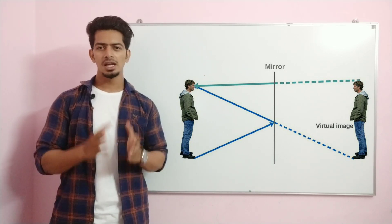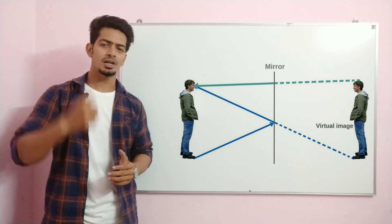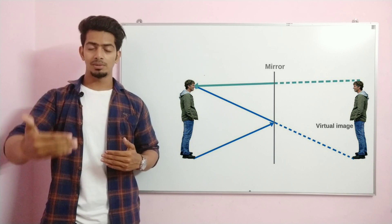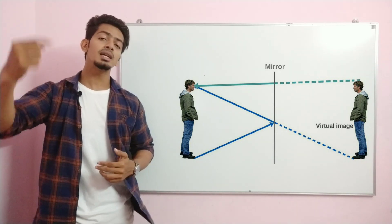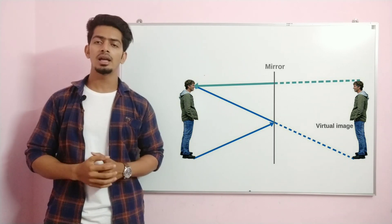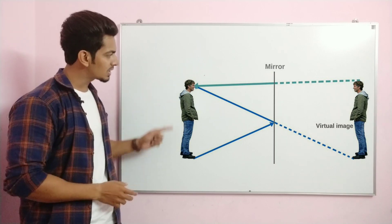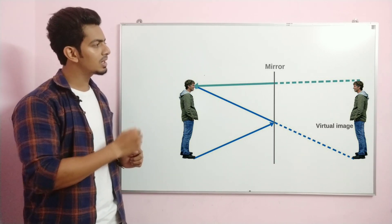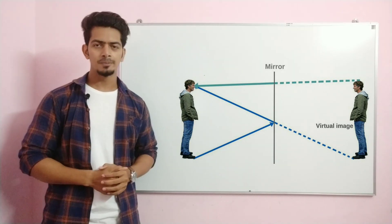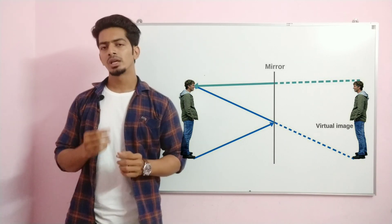In real life, you are standing in front of a mirror, and behind the mirror you appear to be standing — that is the image. The person standing in front of the mirror is the object, and behind the mirror is the image.